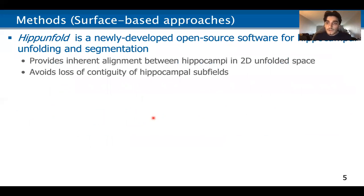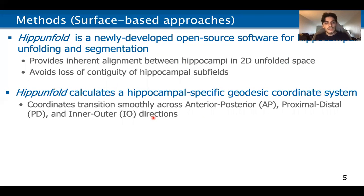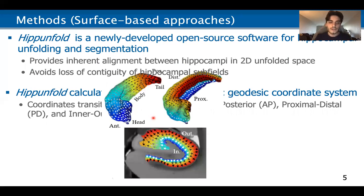HipUnfold is a newly developed open source software for hippocampal unfolding and segmentation. It provides inherent alignment between hippocampi in a 2D unfolded space, and it avoids the loss of contiguity of hippocampal subfields seen in common automatic segmentation methods. HipUnfold calculates a hippocampal-specific geodesic coordinate system, going from a Cartesian coordinate system in the MRI to a geodesic coordinate system that respects hippocampal folding. The coordinates transition smoothly across the anterior-posterior, proximal-distal, and inner-outer directions.